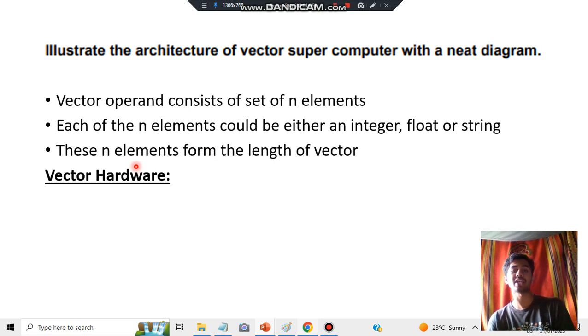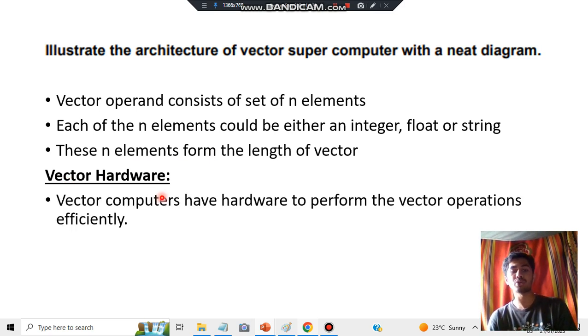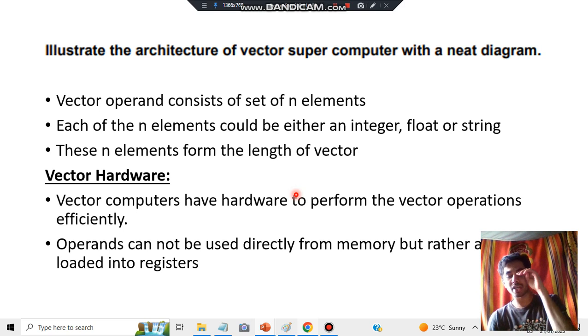Then we have to describe the vector hardware. What does it consist of? Vector computers have hardware to perform the vector operations efficiently. Why do we have the vector hardware? To perform the operations efficiently. And it cannot be directly used from the memory but are loaded into the registers. Vector data we cannot use directly from the memory. There are things called registers, which are also used for memory storage. Before using the memory, we will be transferring whatever is in the vector quantity to the registers, then we will be using it.